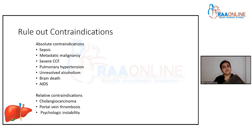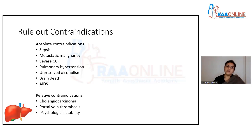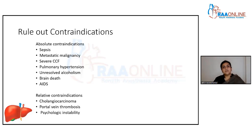Metastatic malignancies are an absolute contraindication — HCC per se without metastasis can still be transplanted, but if there is evidence of metastasis, it is an absolute contraindication, because the prognosis is already guarded. It would be unfair to subject a donor to hepatectomy to give a new liver to a recipient who already has metastasis.